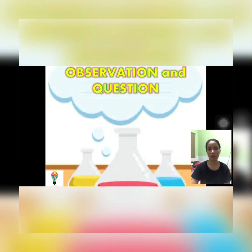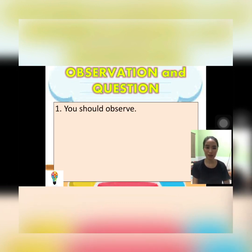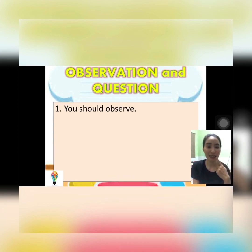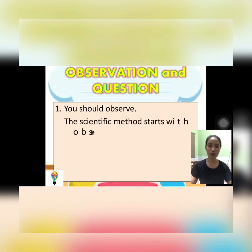Let us now look at the first step: observation and question. How do you observe? You need to use your five senses — the sense of sight, the sense of smell, the sense of taste, the sense of hearing, and the sense of touch. That is the proper way of observing. Now, can you try observing your environment or surroundings using your five senses?